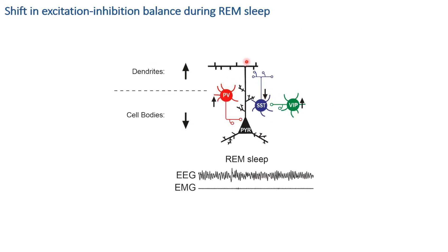To summarize: we found decoupling of principal neurons due to a reorganization of local inhibitory neurons. Parvalbumin interneurons provide inhibition at the cell body, while VIP interneurons increase their activity to silence somatostatin. As a consequence, the dendrites are disinhibited — they no longer receive inhibition from somatostatin.